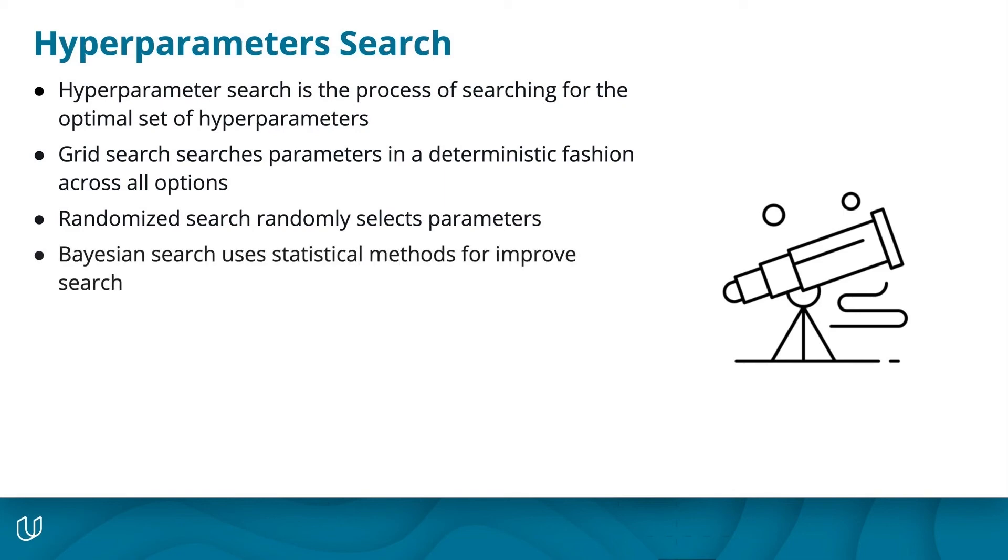Lastly, Bayesian search is a method where using statistics, you intelligently search a set of parameters, updating how you select the next set based on the results of the previous parameter searches.